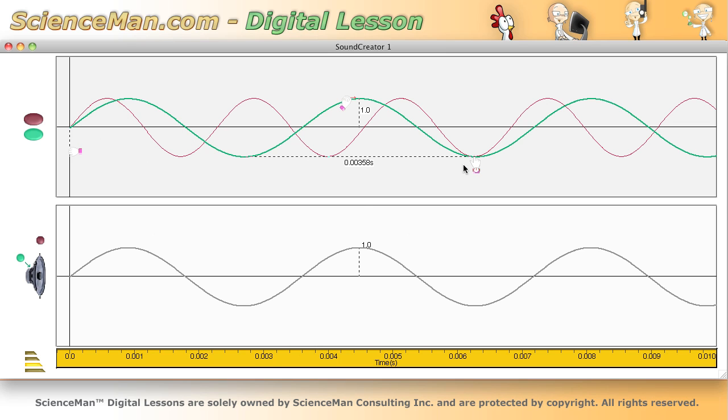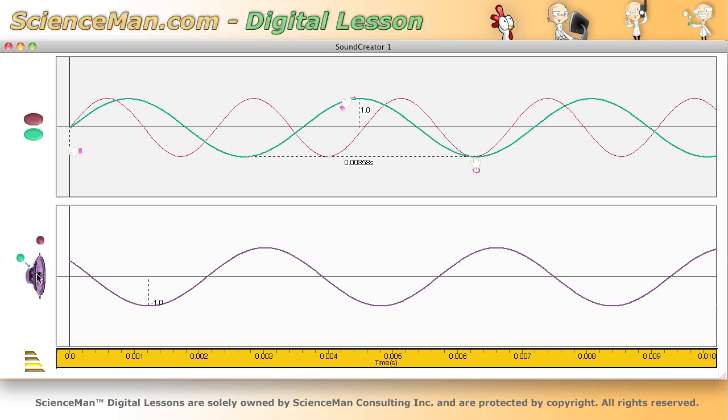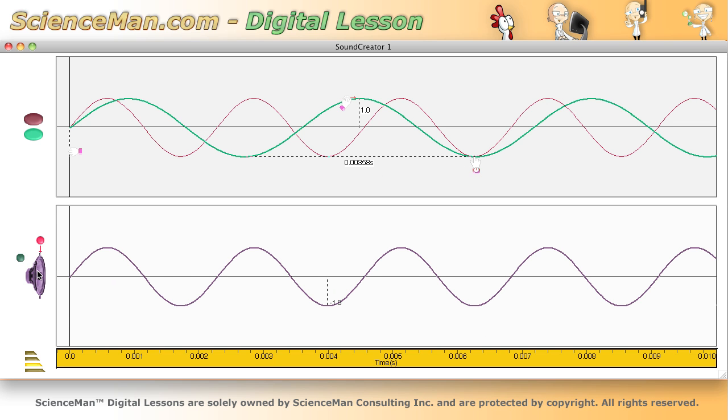Now these are representations of sound waves. So if a sound wave is longer, it should have a lower frequency or lower tone. Let's have a listen to it. So that's the green waveform. Now if we listen to the red waveform, we can hear that it has a higher frequency, or in sound wave jargon, a higher pitch.